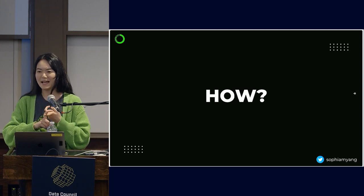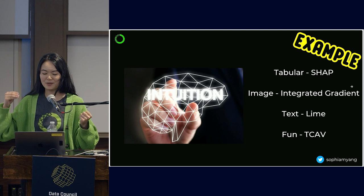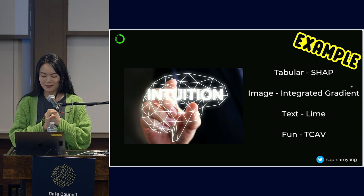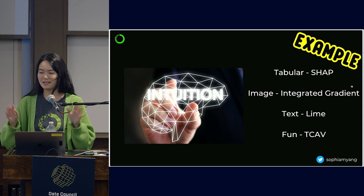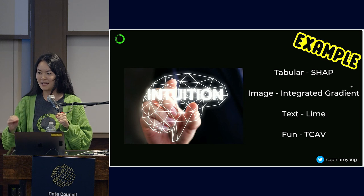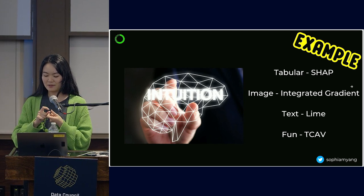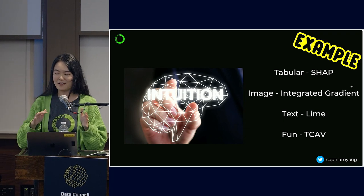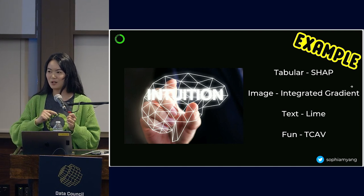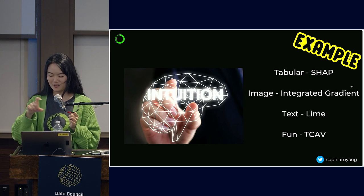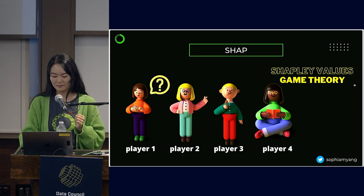So we have talked about why. We have talked about what. Now let's talk about how. I'm going to go through four methods, four examples for you, just provide you a basic intuition of how those methods work. You might have already familiar with all the methods, since all the methods here are pretty popular, especially SHAP and LIME are very commonly used. I'm going to talk about tabular data with SHAP, image data with integrated gradient, text data with LIME, and then most interesting and fun method that I think is TCAV. Note that SHAP, integrated gradient, and LIME works for all types of data, not just limited to the individual data types I'm listing here.